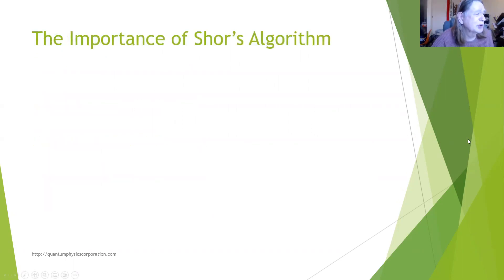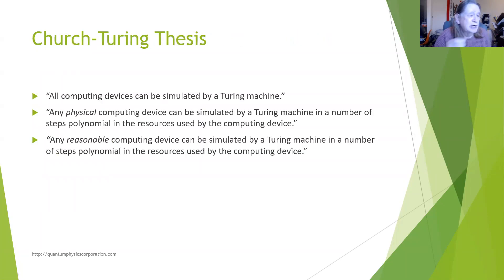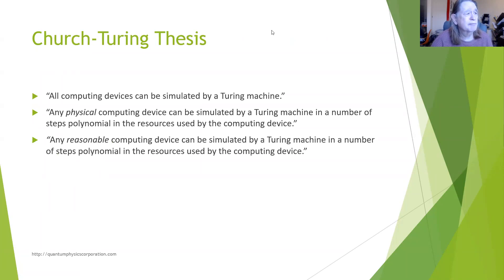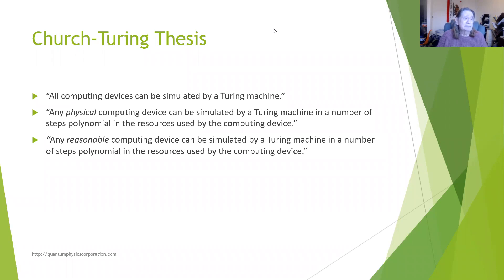I talked about the importance of Shor's algorithm. The thing is, public key encryption is based on factoring products of prime numbers, and that can be done with a classical computer. It just takes a million years for the large numbers that are used, and that's why it's believed that the RSA encryption scheme is secured, at least in the pre-quantum era.